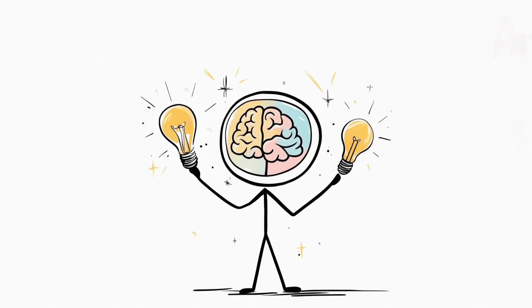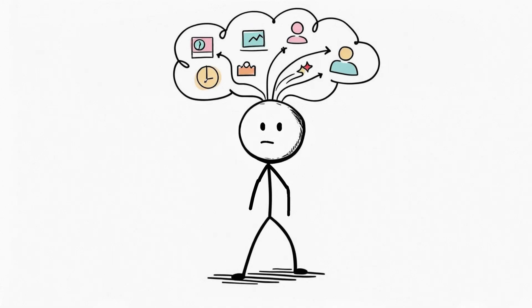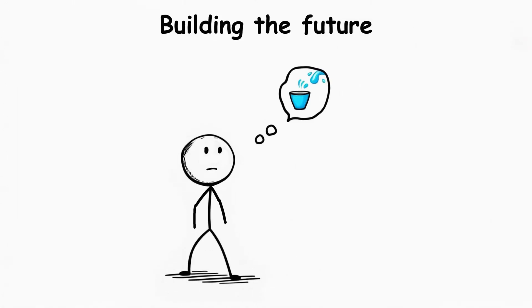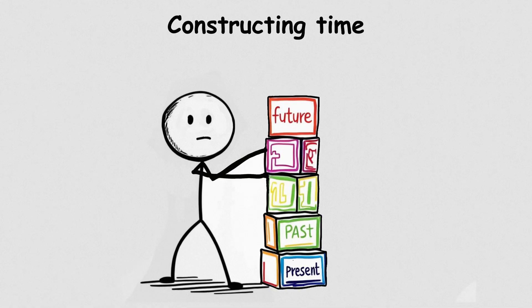Our brain is an amazing instrument. It doesn't just register events. It builds reality from signals, sensations, memory, and expectations. The brain connects memories and forms the sense of the past. It creates models of what may happen, and that becomes the future. And in between lies the feeling of the present moment. We don't perceive time directly. We construct it.